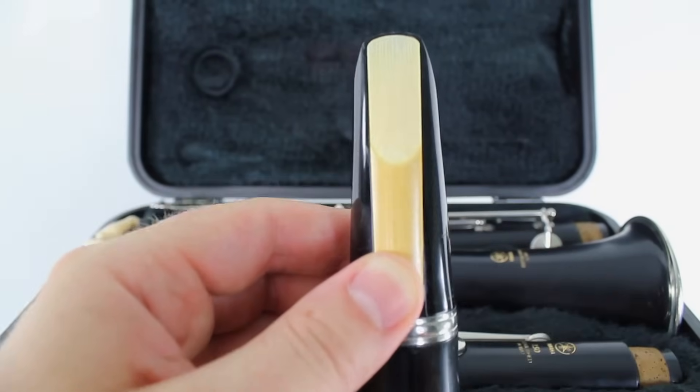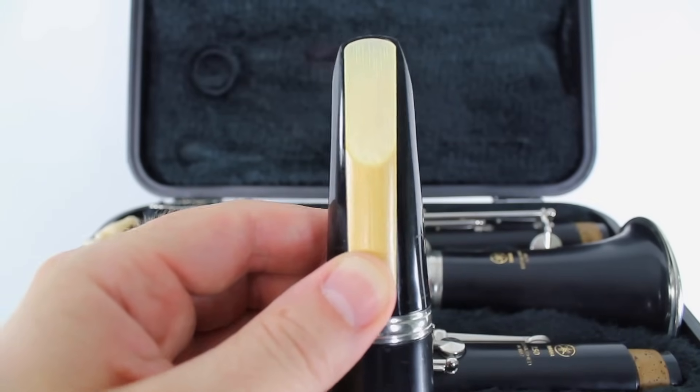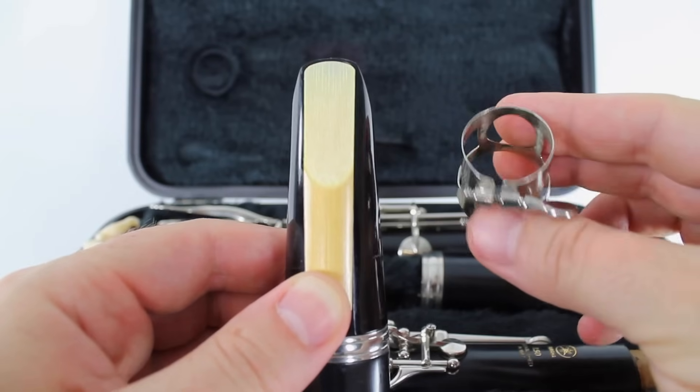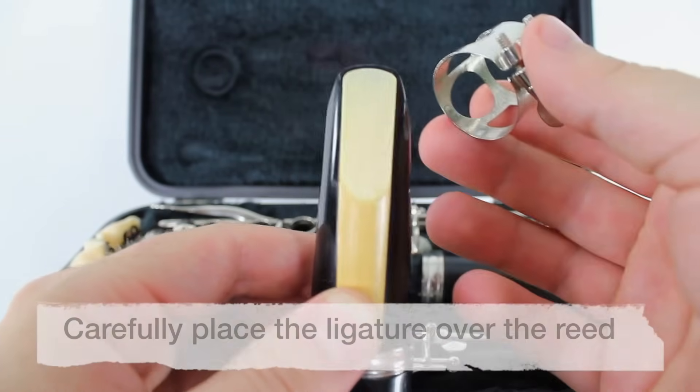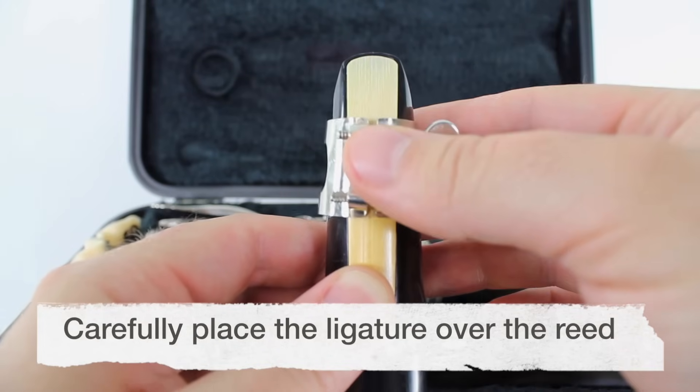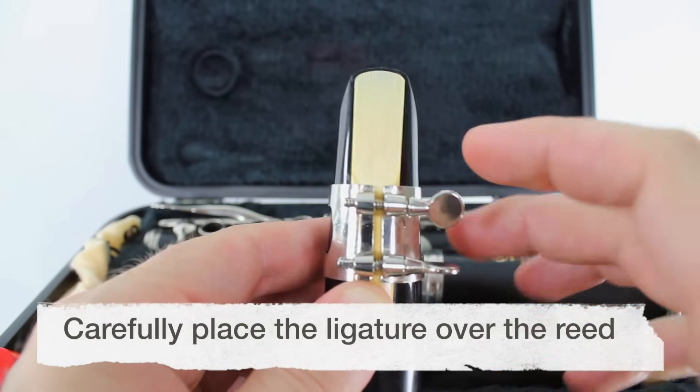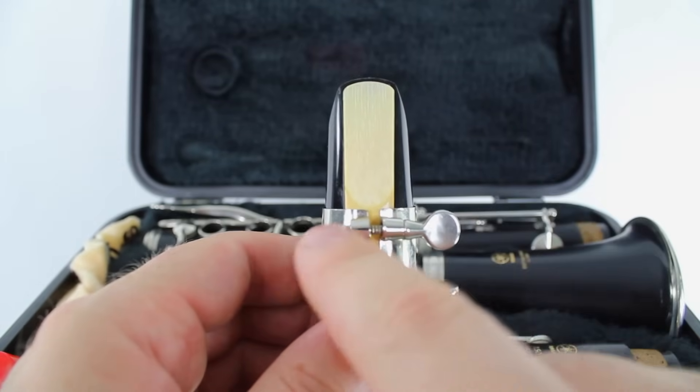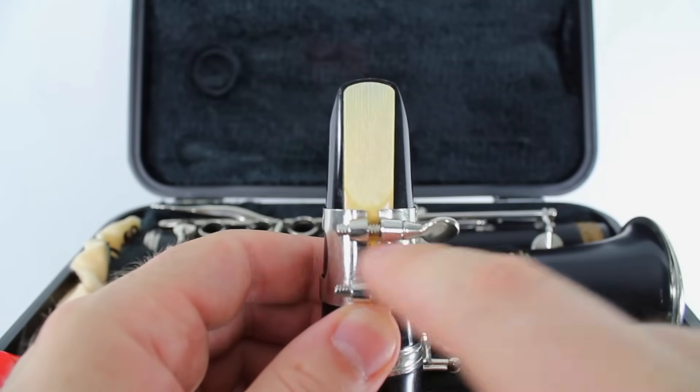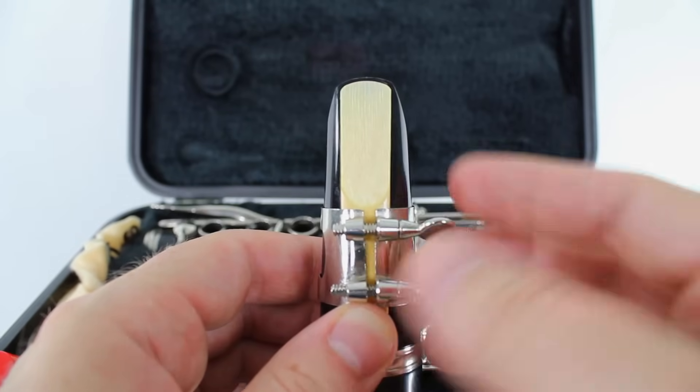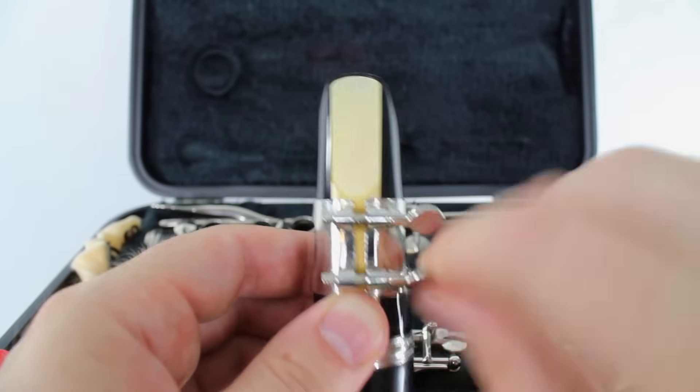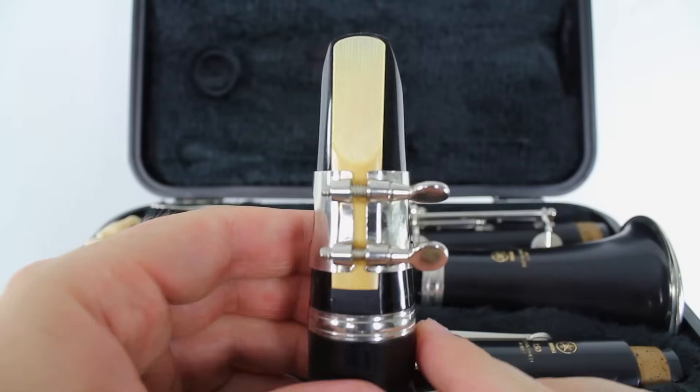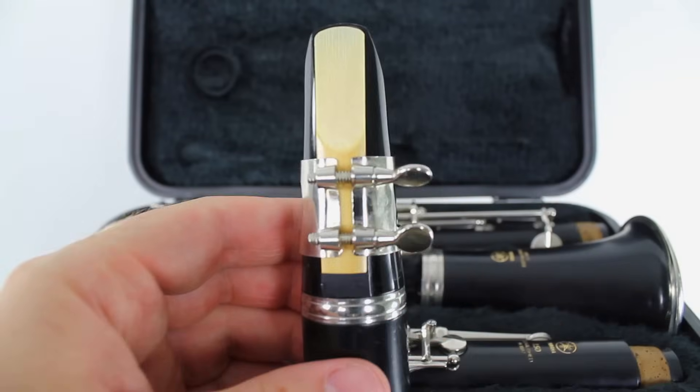So as you can see, I'm holding the reed in place with my left thumb here. And with my right hand, I'm going to pick up the ligature. And very, very carefully, I'm going to place the ligature over the reed and mouthpiece. And I'm going to push the ligature down so the ligature is overtop the dark part of the reed, the part where the bark is. If you need to loosen the screws to push it down further, you should do that. There we go.